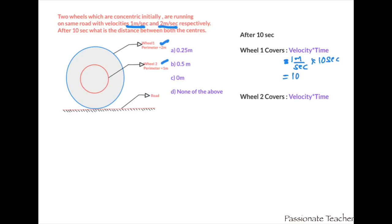Now let us look at wheel 2. Distance covered by wheel 2 equals velocity into time, that's 2 meters per second into 10 seconds, which comes out to be 20 meters. This means wheel 1 will cover 10 meters of linear distance, and wheel 2 will cover 20 meters of linear distance.